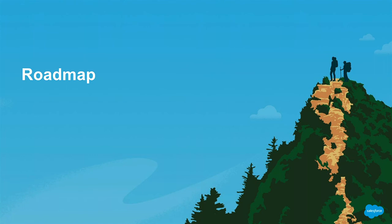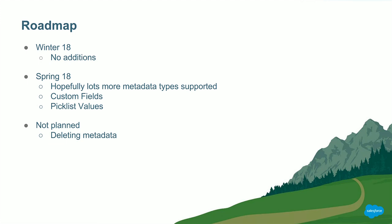The Apex Metadata API is a brand new feature that came in Summer 17 — so where is it going? Winter 18 came without new features for the Apex Metadata API. However, from conversations with Salesforce, we're expecting Spring 18 to bring a lot more, including many more supported metadata types such as custom fields and picklist values. It's worth noting that deleting metadata isn't planned, as there's no use case Salesforce currently has. But if you have a good use case, feel free to contact Salesforce and you might change the priority on that feature.